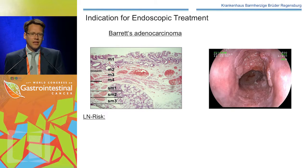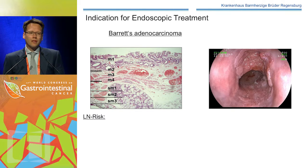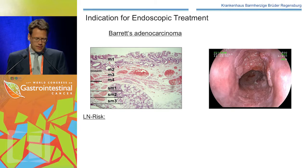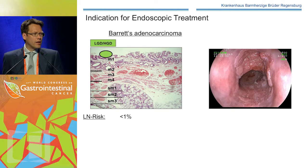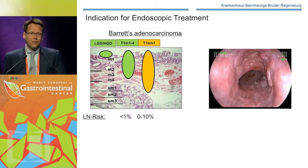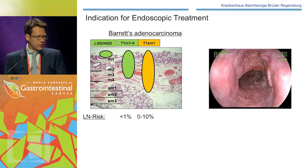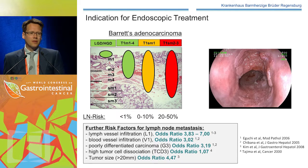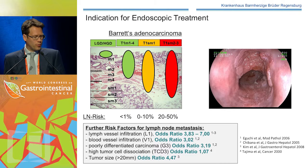First, I want to talk about the indications for endoscopic treatment. There's a very small range where we can treat the patient endoscopically: dysplasia — low-grade or high-grade — and mucosal Barrett's cancer. But when it starts to invade the submucosal tissue, the risk for lymph node metastasis grows up to 10% in SM1 cancer or even higher, and when it invades deeper planes of the submucosal tissue, there is a very high risk of lymph node metastasis and the patient is not curable by endoscopic treatment.